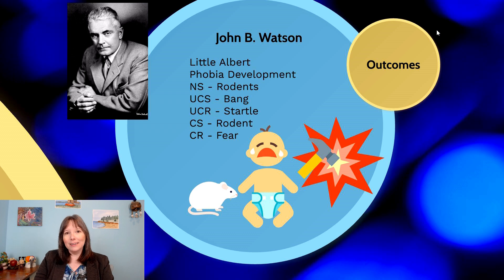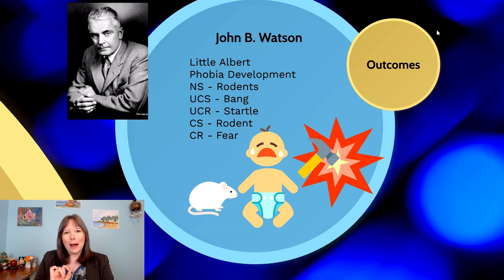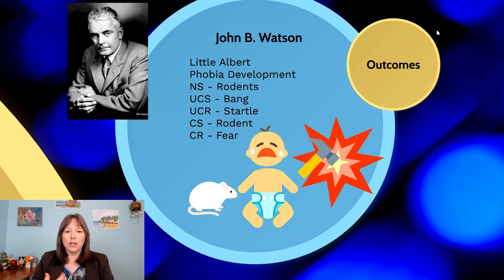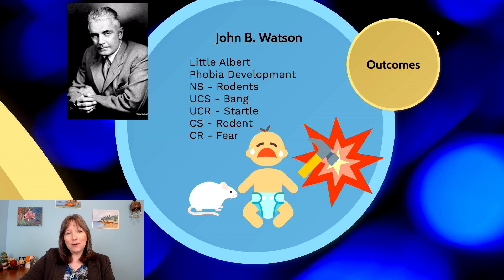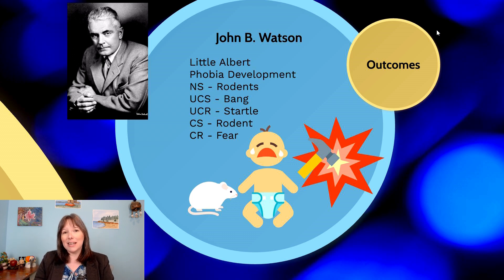Once the bang is paired with the rat — once those two stimuli, those two antecedents, are paired enough in acquisition trials — the rat becomes the conditioned stimulus. Now with no bangs, just by seeing the rodent alone, Little Albert started to have a fear response and panic and cry, because he had made the correlation in his brain that being around the rat led to the loud bang and startle reflex. You can see how the five types — the neutral stimulus, the unconditioned stimulus, the unconditioned response, the conditioned stimulus, and the conditioned response — all work in this example.